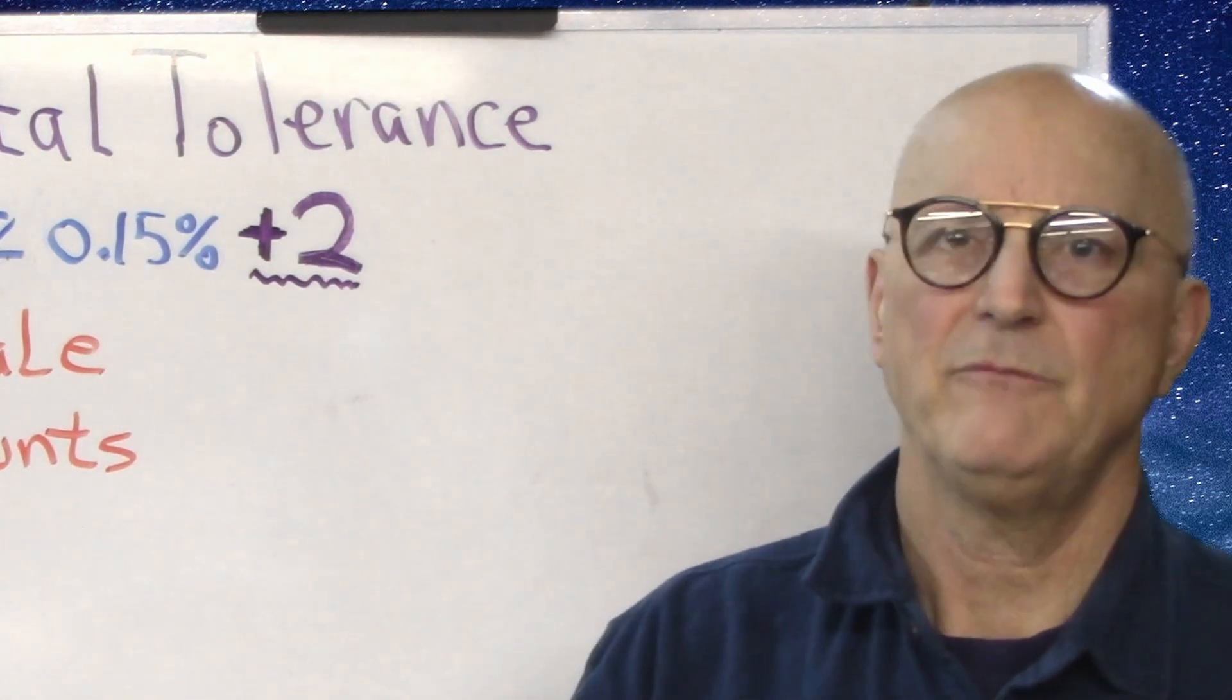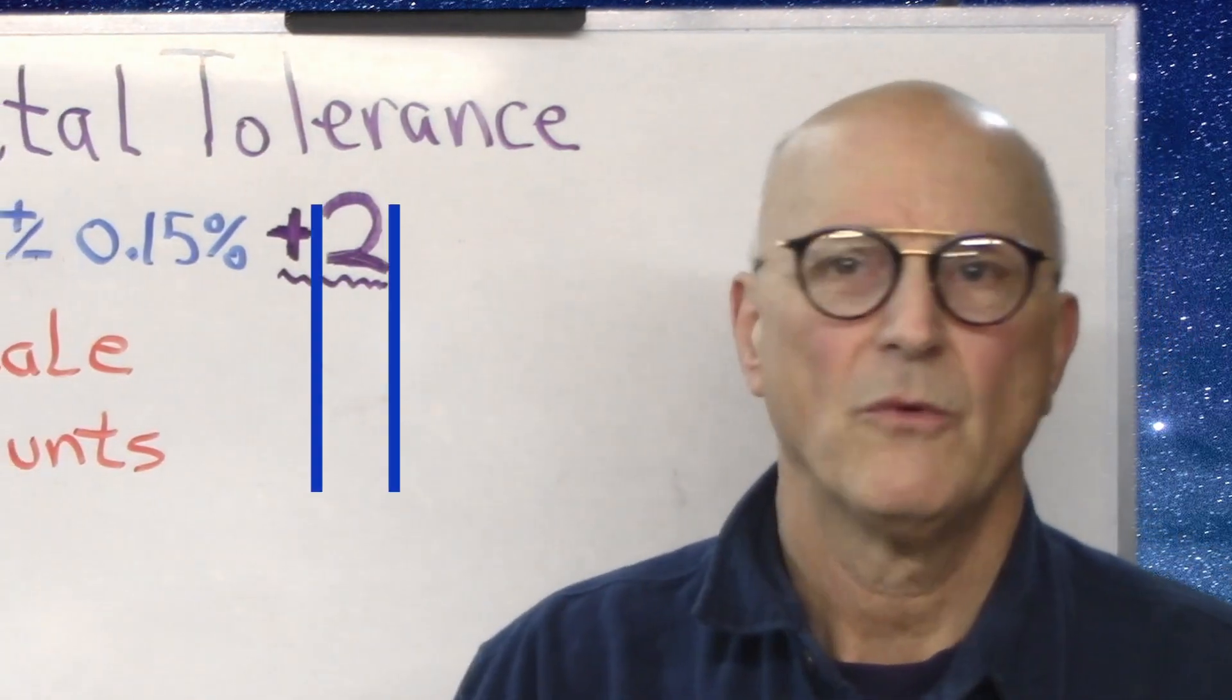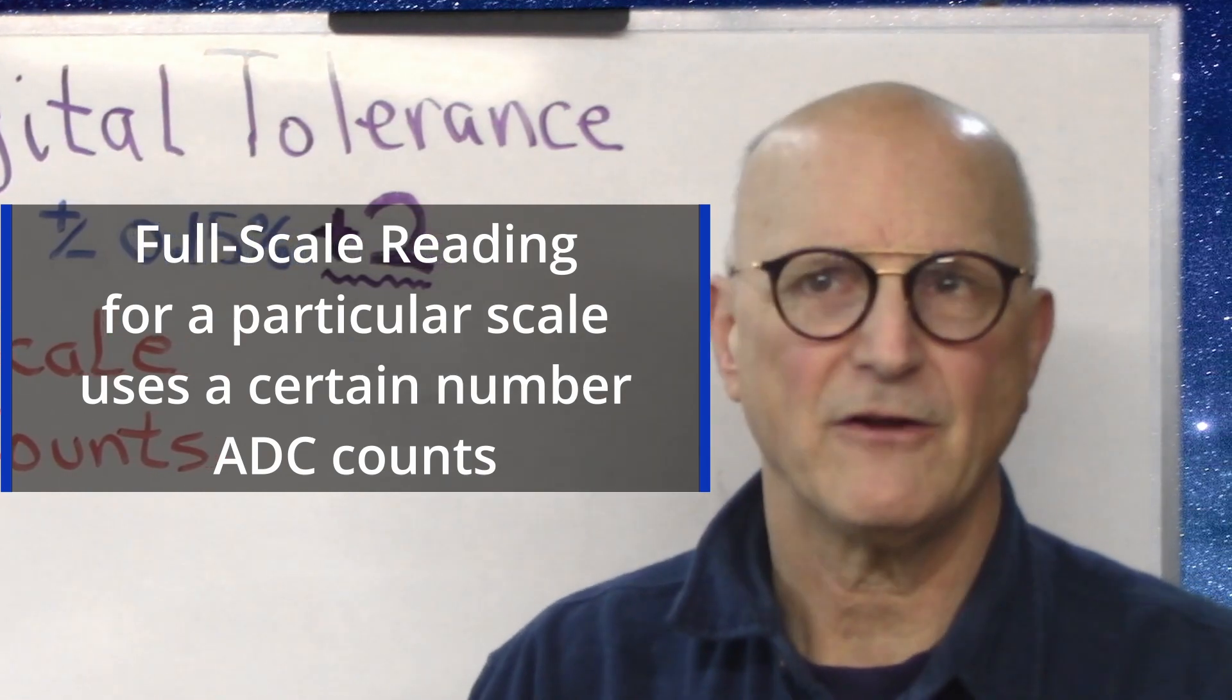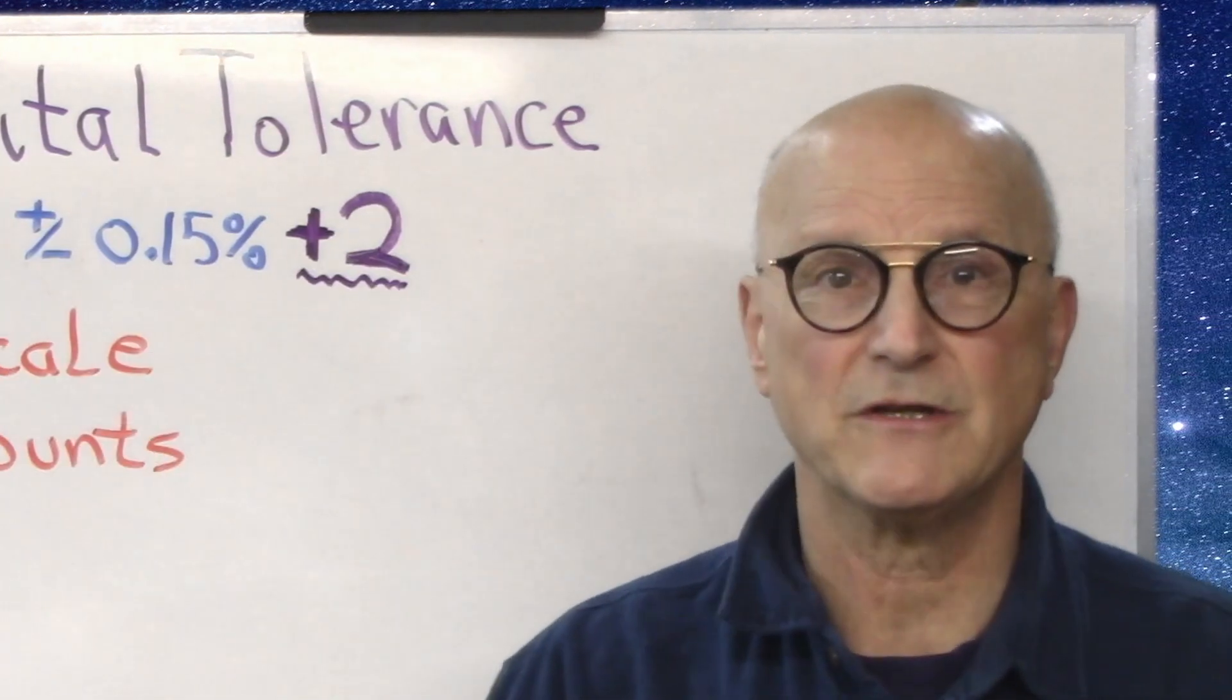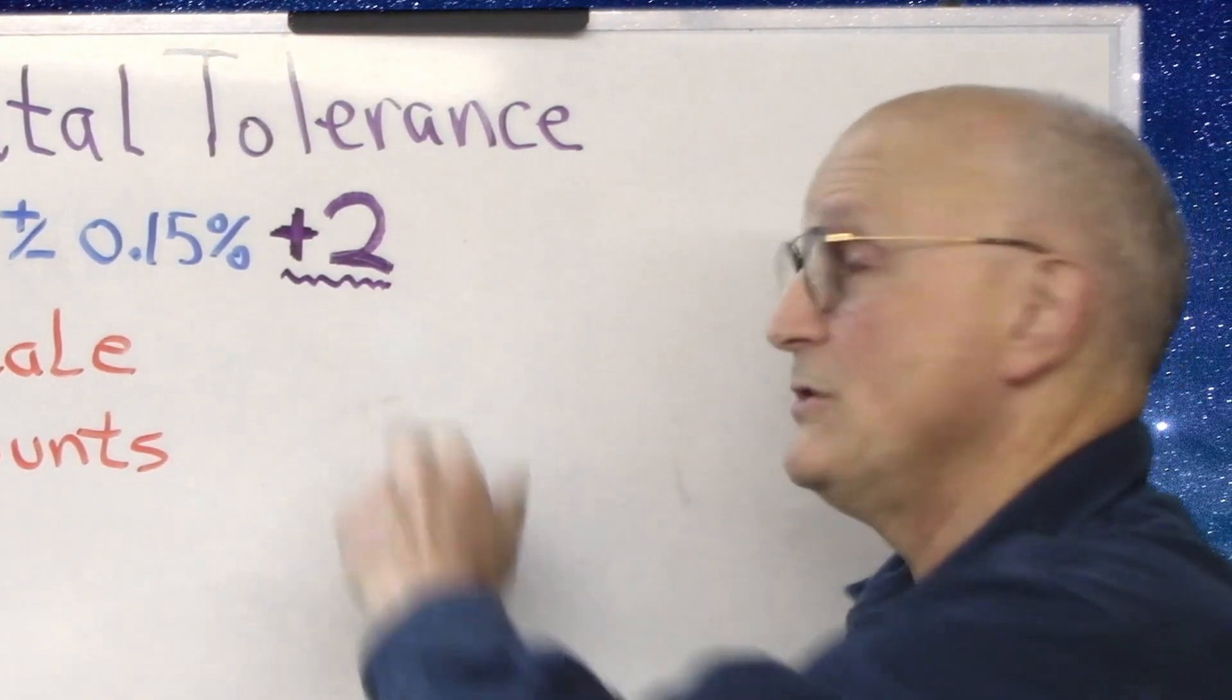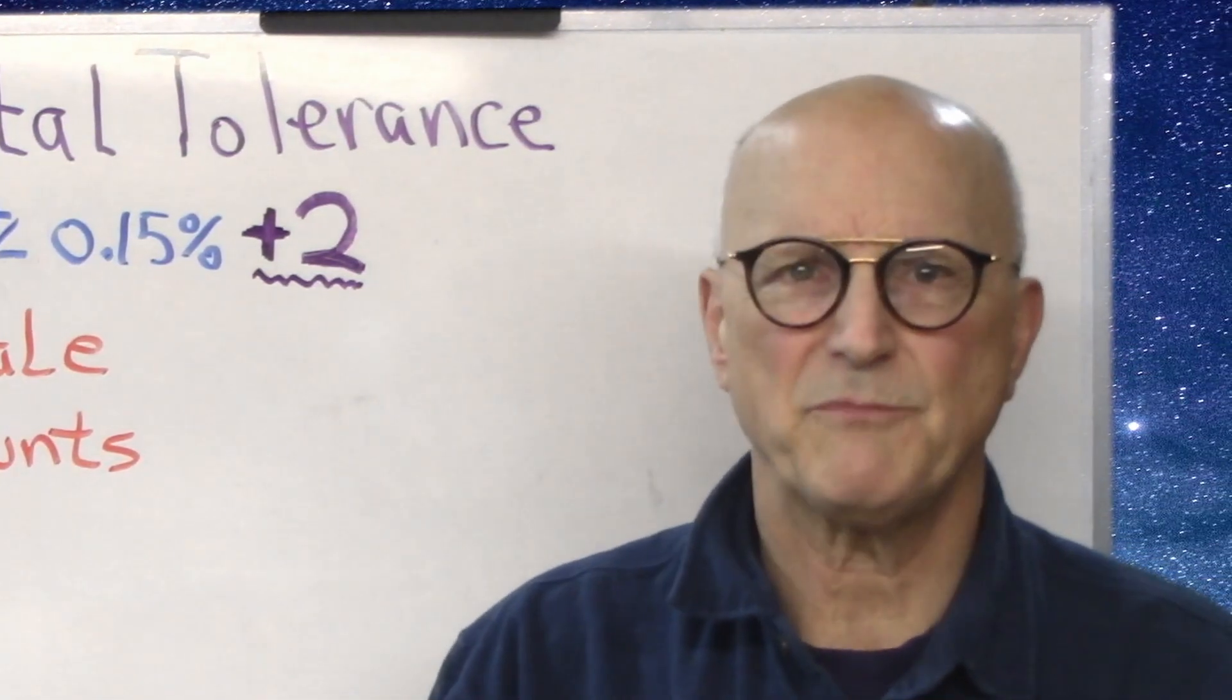It's another way of thinking about the number of bits to the ADC conversion. If I had a 10-bit ADC, it would have 1024 counts. What they're telling us is that the full scale reading for a particular scale uses a certain number of counts of the available counts to represent this voltage. In this case, I could be off as many as two of those counts in either direction.